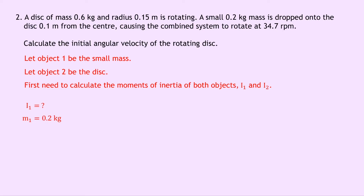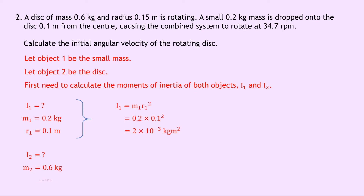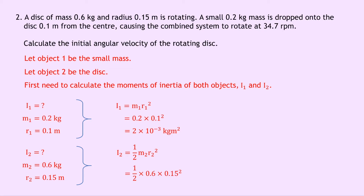For object 1, the small mass: M1 is 0.2 kilograms, the distance from the center is 0.1 meters, so I1 equals M1 R1 squared equals 0.2 times 0.1 squared, which is 2 times 10 to the minus 3 kilogram meters squared. For object 2, the disk: M2 is 0.6 kilograms, radius is 0.15 meters. The moment of inertia of a disk is I2 equals one-half M2 R2 squared, which equals 0.5 times 0.6 times 0.15 squared, giving 6.75 times 10 to the minus 3 kilogram meters squared.